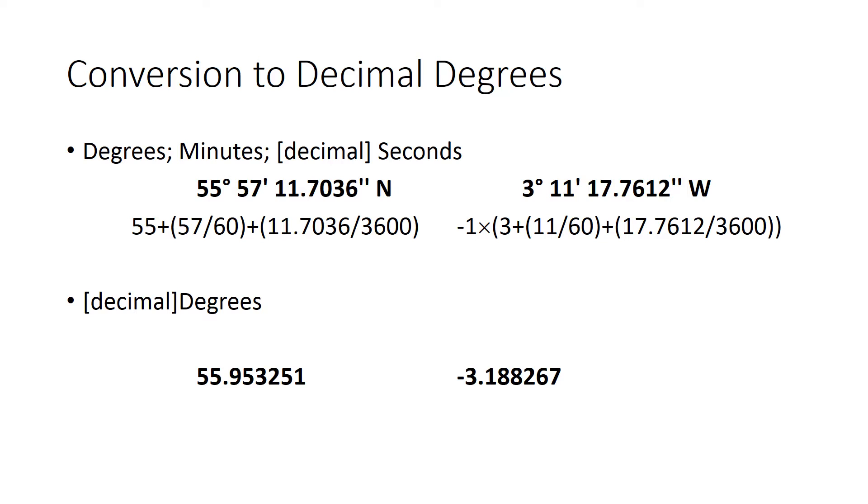So quickly, just a note on how to convert between the format. If we started out with the degrees, minutes, and decimal seconds, the more traditional kind of thing, we'd basically take the 55 and then we'd add to that the minutes divided by 60, and we'd add to that the seconds divided by 3,600, which is 60 times 60. Similarly for the degrees west here, we do exactly the same thing except we need to make sure that once we've done that conversion, we multiply everything by minus 1, just to make sure that we get our conventional direction right. And these mathematical transformations here lead to these numbers down here.